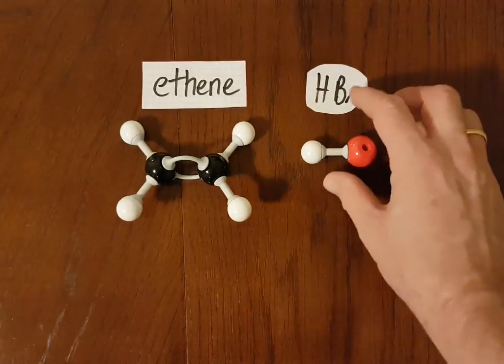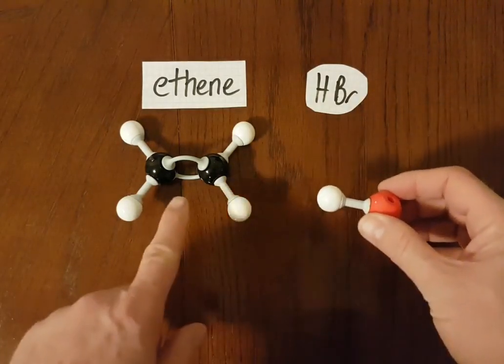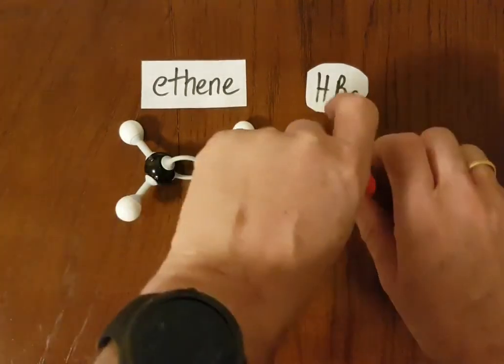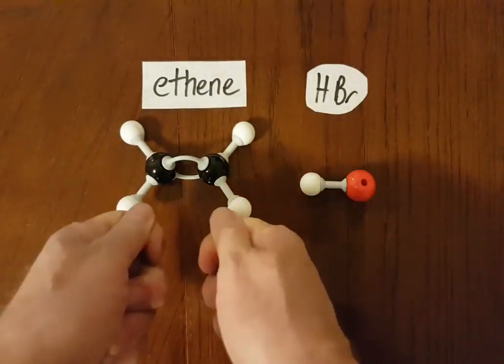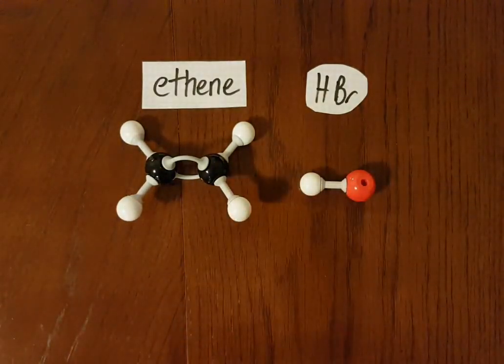Let's look at another example of electrophilic addition. Here's hydrogen bromide adding on to ethene. So again, this bond breaks. Snap this in two and pop one on each side. But you do have to know the mechanism for higher-level IB chemistry.